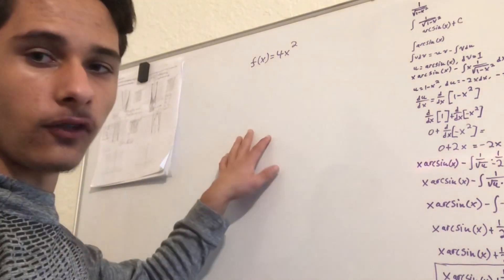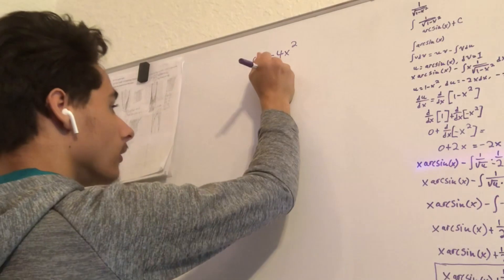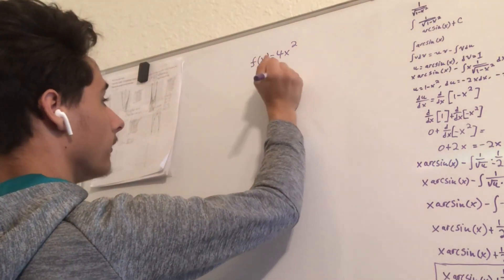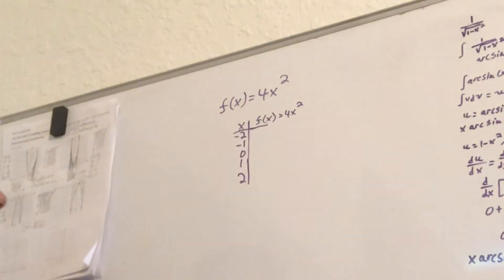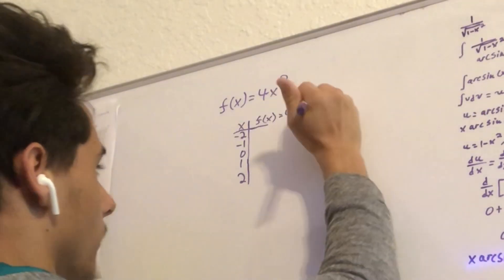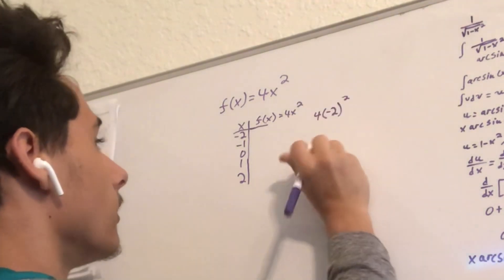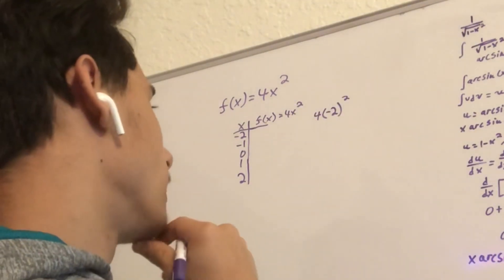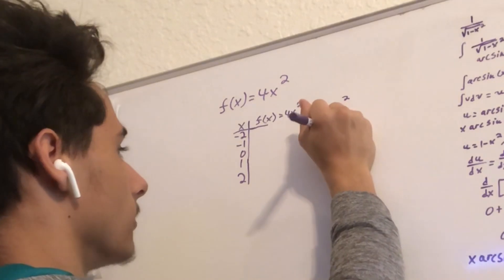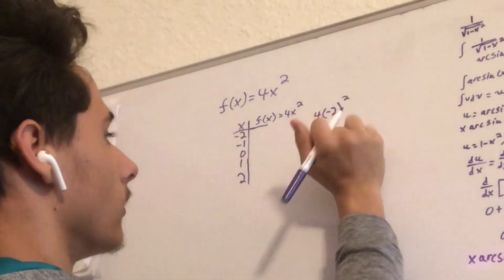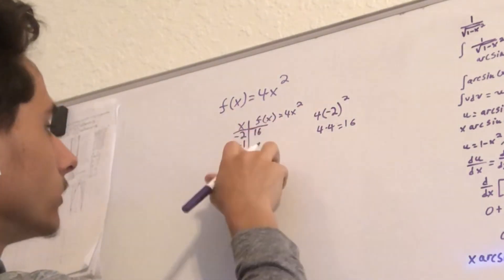Okay, we're gonna do this for f(x) = 4x squared. To do this, we need to make an x and f(x) table and plug in each of the x values. So let's do the first one: four times negative two squared. Negative two to the power of two is four, so it's just four times four, which is 16. So that's negative two, sixteen.